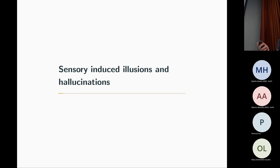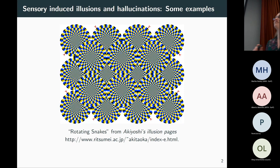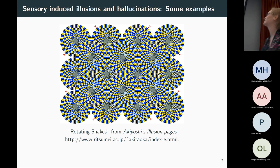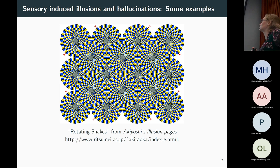Here are some sensory-induced hallucinations — ones that occur in response to being shown some kind of image. This first one is a static image, but because of the way the contrast changes, when it's viewed in the periphery you get this rotating effect and these sort of writhing snakes. The movement you're perceiving isn't really there. It comes from Akiyoshi Kitaoka's hallucinations page, where you can see all sorts of different catalogues of visual hallucinations.